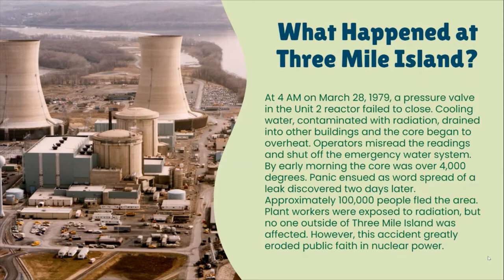The other major event was Three Mile Island. At 4 a.m. on March 28, 1979, a pressure valve in the Unit 2 reactor failed to close; cooling water contaminated with radiation drained into other buildings and the core began to overheat. Operators misread readings and shut off the emergency water system — by early morning the core was over 4,000 degrees, just a thousand degrees from a meltdown. Within a five-mile radius people fled; plant workers were exposed to some radiation, but no one outside Three Mile Island was directly affected. Even so, it greatly eroded public faith in nuclear power, and no new nuclear reactors have been created in the United States since.